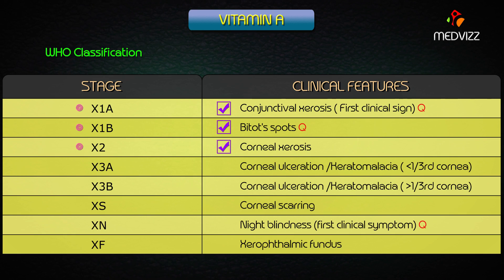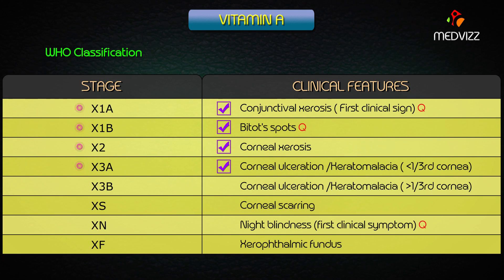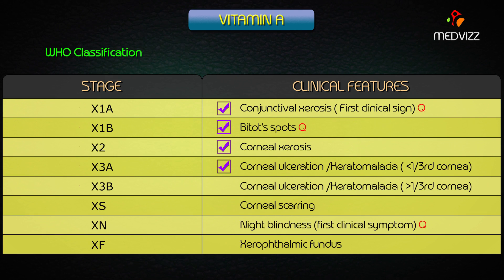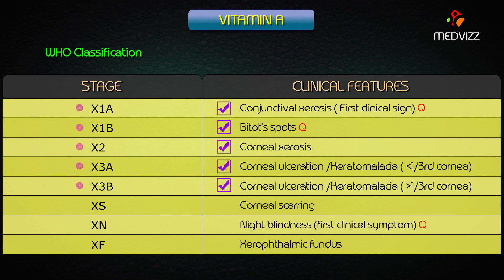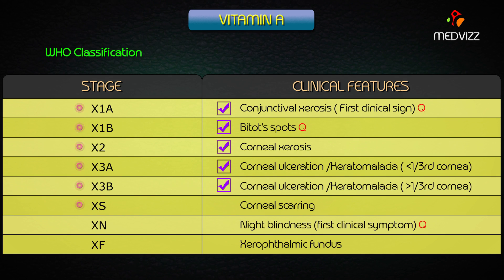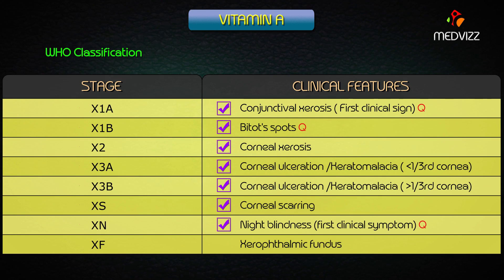Stage X3A involves corneal ulceration and keratomalacia affecting less than one-third of the cornea. Stage X3B also shows corneal ulceration and keratomalacia, but the area involved is greater than one-third of the cornea. XS represents corneal scarring, and XN is the pre-terminal stage known as night blindness, which is the first clinical symptom.